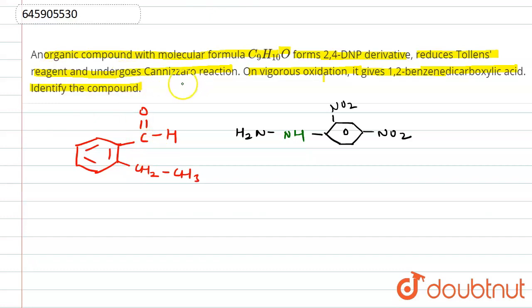Secondly, Cannizzaro reaction. For Cannizzaro we do not have any alpha hydrogen, so this will be the aldehyde. And along with that two carbons will be over here. After vigorous oxidation of this compound,